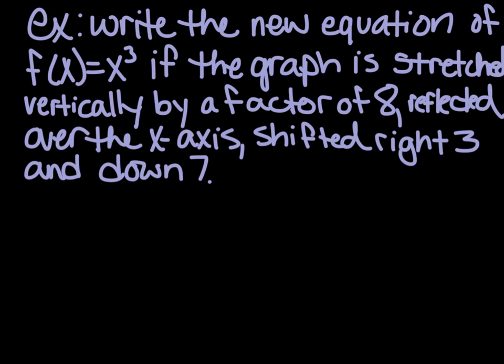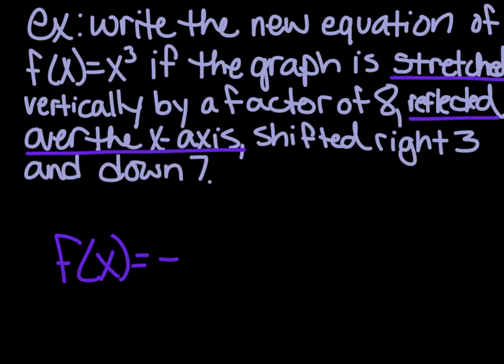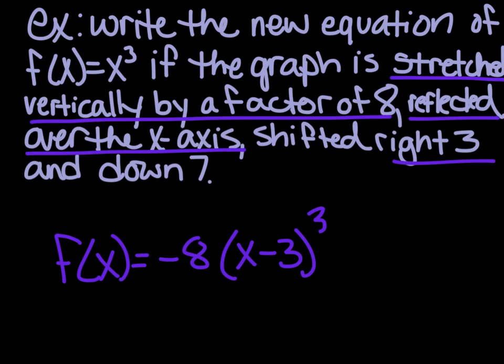Okay, should have typed this, my handwriting is awful, but sorry. Next example, we're going to write the new equation of f(x) = x³. If the graph is stretched vertically by a factor of 8, reflected over the x-axis, shifted right 3 and down 7. So we have f(x) equals, and then our a needs to be positive or negative. If we're reflecting over the x-axis, that makes it negative. And our a, if we stretch vertically by a factor of 8, it's -8. Then we have, we don't have a b, because we don't have a horizontal stretch. And then we don't have a horizontal reflection. So x, we're going right 3, minus 3, cubed. Don't forget the cube. And then down 7, minus 7. And that's it. Just like all the other functions we've done so far.